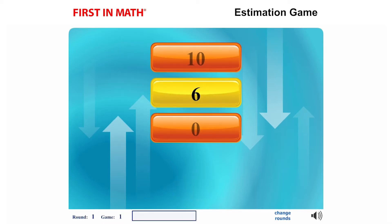For example, this center number is six, the number on top is ten, and the bottom number is zero. To round to the nearest ones place, we need to drag the six up to round to ten.